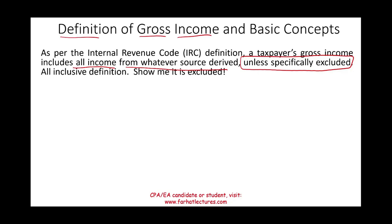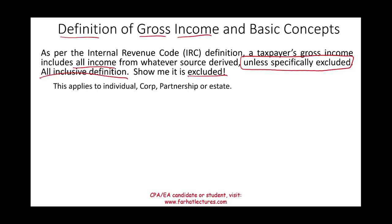You don't look in the code to determine whether an amount is taxable. You look to see if it's excluded. The definition is all-inclusive — all income is included. If you can show me in the code that it's excluded, then it's excluded; otherwise, it's included. This concept of gross income applies to individuals, corporations, partnerships, and estates. It's a very inclusive definition.